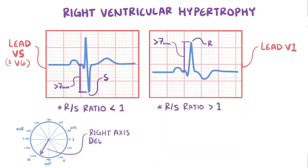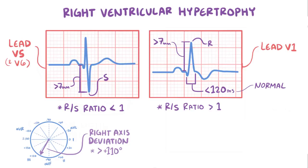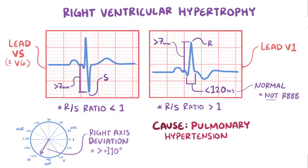Typically, there's also right axis deviation in right ventricular hypertrophy, resulting in an axis of plus 110 degrees or more. In right ventricular hypertrophy, the QRS complex is less than 120 ms, meaning that it's not longer than normal. This is important because it means that the changes can't be the result of something like a right bundle branch block, which would cause a longer than normal QRS complex. Right ventricular hypertrophy can develop for a number of reasons, a common one being pulmonary hypertension, which makes sense because the right ventricle has to build up muscle to push blood against higher pressure into the lungs.